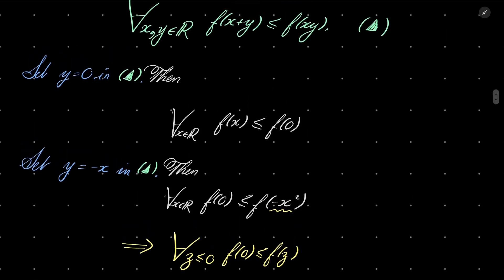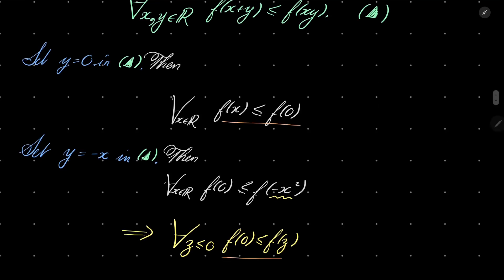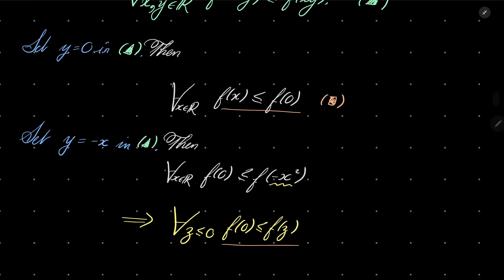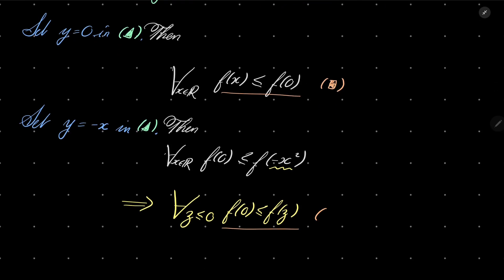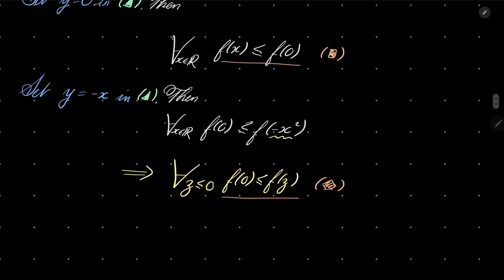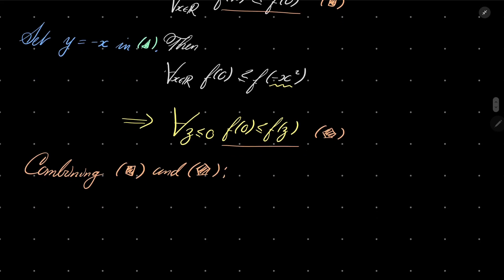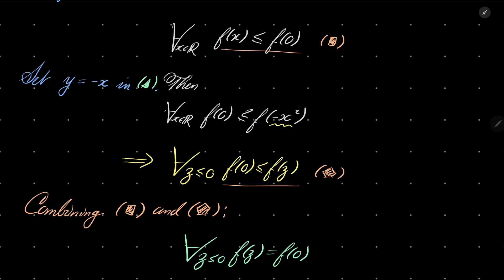Now let's take a look. Combining this and that, let's mark it square and pentagon. So combining conditions square and pentagon, we see that for every non-positive number z, f(z) equals f(0). It actually equals because we have inequalities in two different directions. So now we know that our function is constant on the set of non-positive numbers.